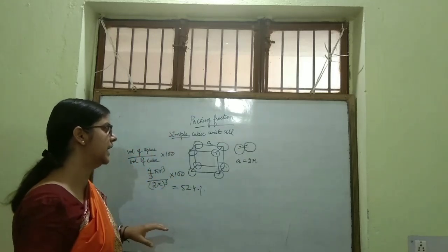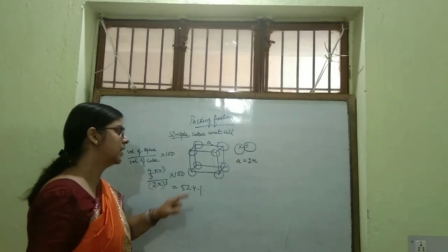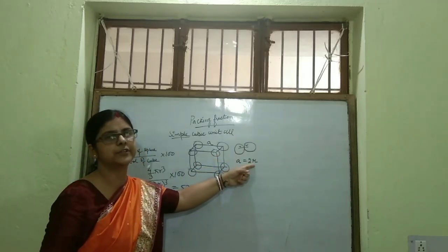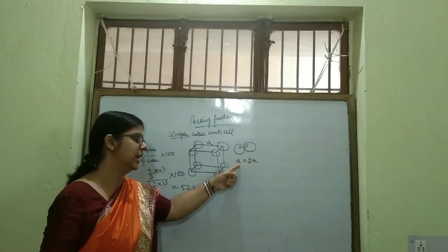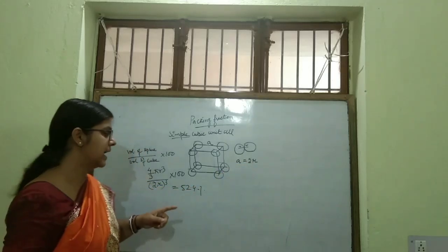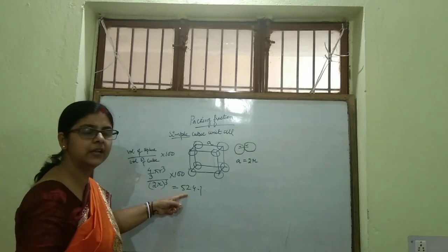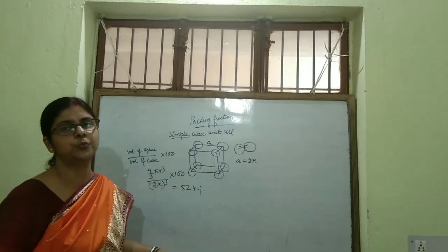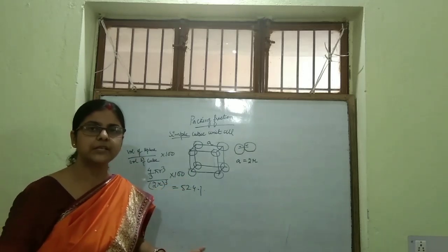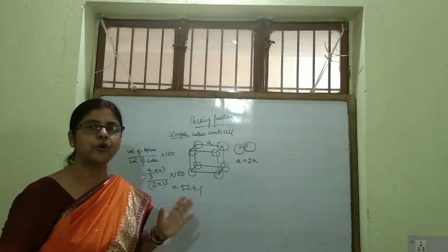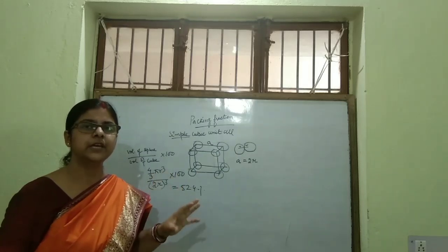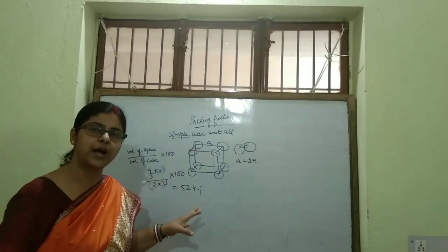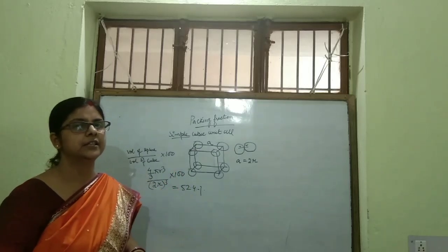So for the Simple Cubic unit cell, the relationship between edge length and radius of the particle present at the corner is A = 2R. And the packing efficiency is 52.4%, meaning 52.4 parts of the unit cell is being occupied by the particles.